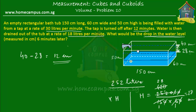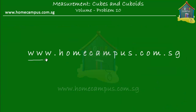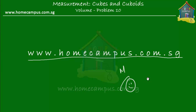Here's what we did: we found out the two volumes of water — the volume when the tap was turned on for 12 minutes, and the volume after the drain was turned on for 6 minutes — using the rates of flow of water. Using those volumes, we calculated the height of the water level. The height at first was 40 centimeters, the height after drainage was 28 centimeters, and the drop in the water level is 12 centimeters. Please do practice similar word problems at www.homecampus.com.sg — practice makes perfect. Bye-bye.